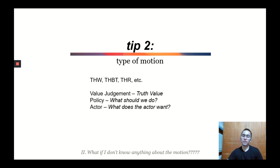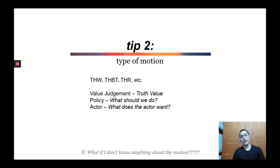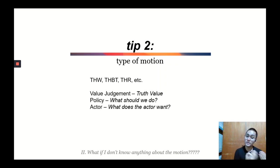Let's start with types of motion. There are many types, and I'd suggest the world's debating manuals for more detail. Just an overview: there's 'this house would,' 'this house believes that,' 'this house regrets,' and many more. At their core, there are value judgments, policies, and actor debates. Value judgments are about truth: is this thing true or not, or in a world where it is or isn't true, which world is more preferable? Policy debates are about what we should or shouldn't do based on outcomes or principles. Actor debates are fundamentally about what the actor wants, and debaters have to prove the specific interest of the actor and what actions will therefore follow.